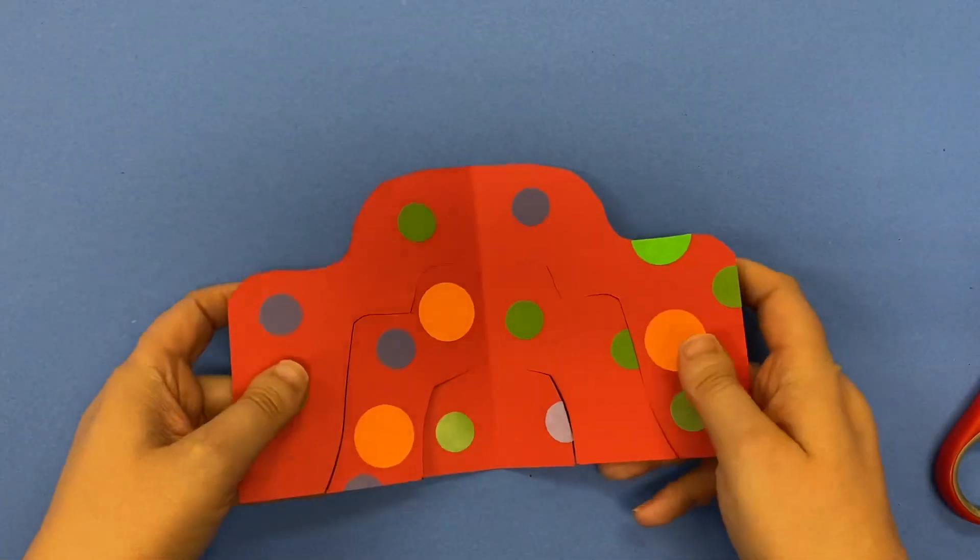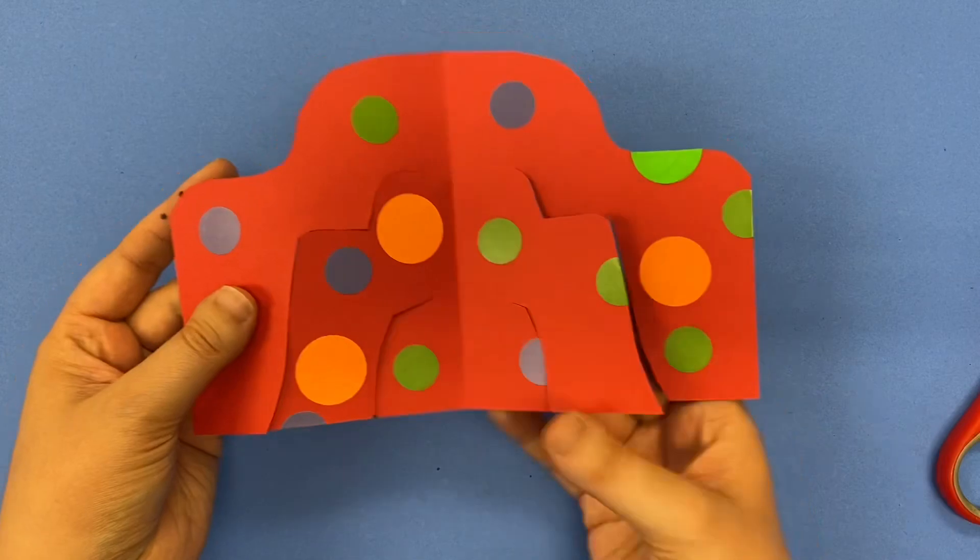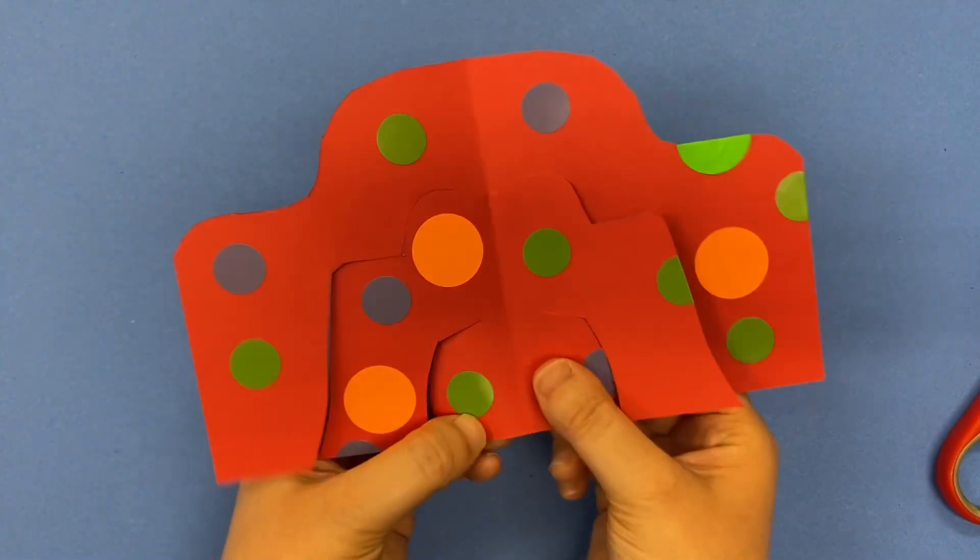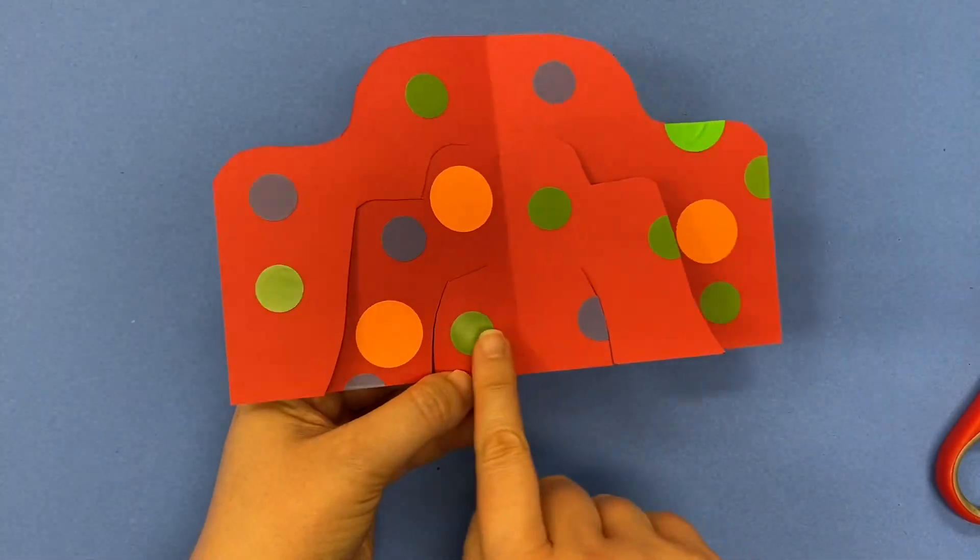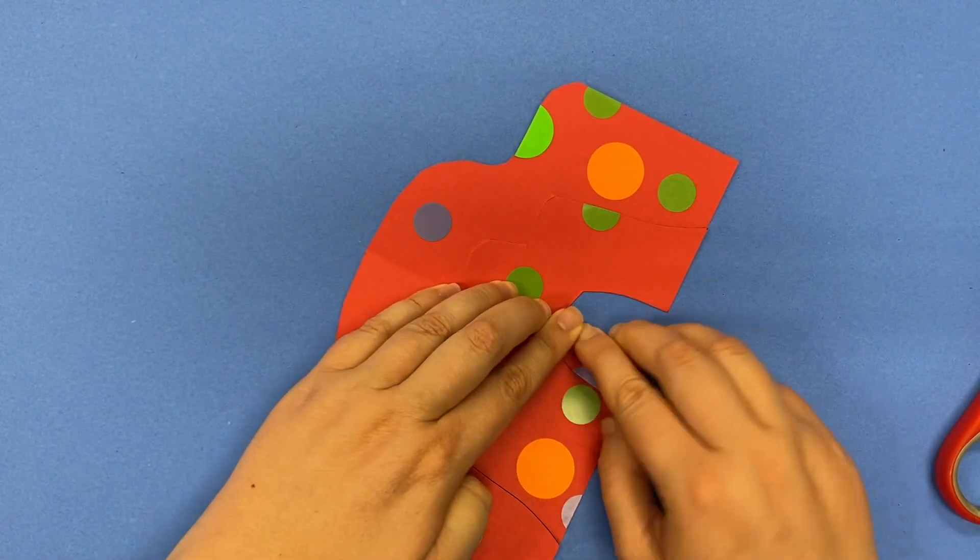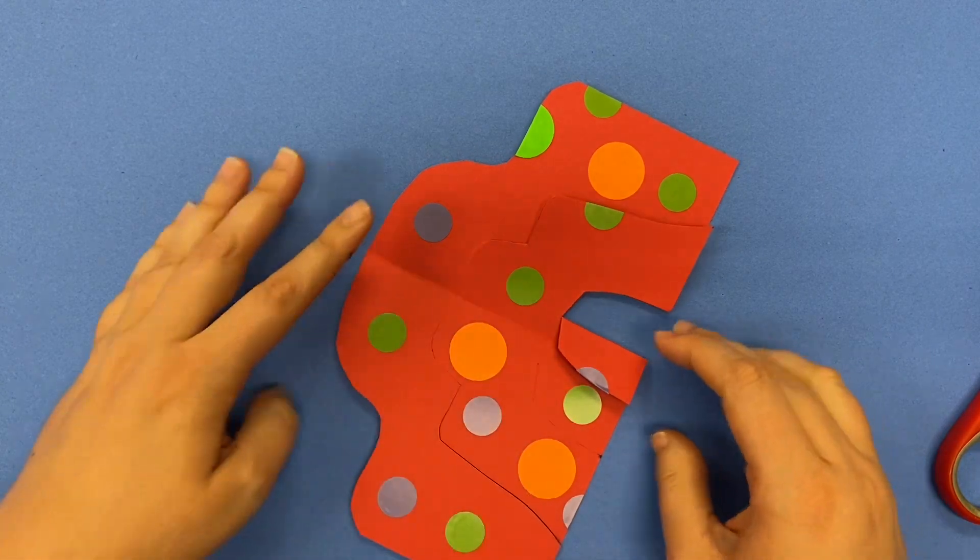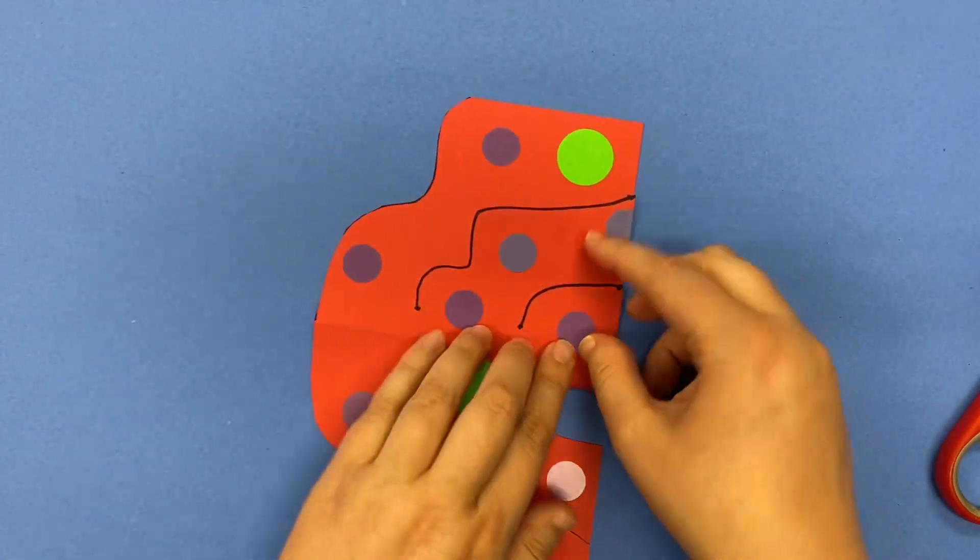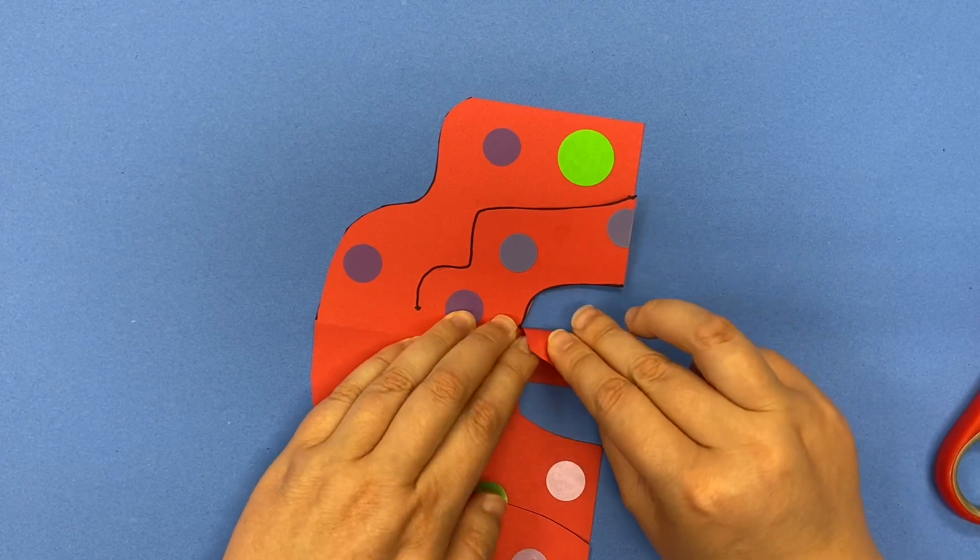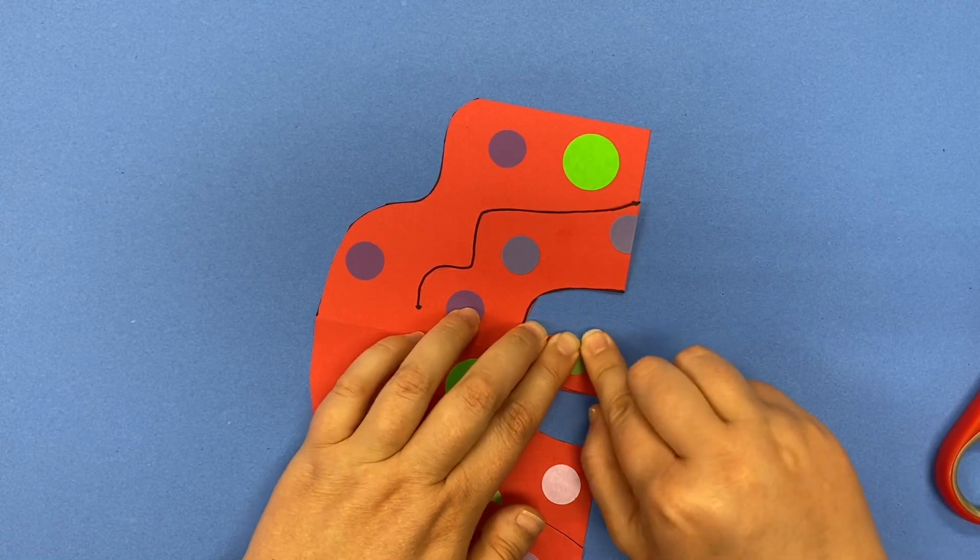So I'm going to start at the bottom. So I've got these little legs right here, and I'm going to fold one of them in front. Make sure that the line stays the same right along the bottom. And then I'm going to turn it over and I'm going to fold the other one in the opposite direction. Make sure that line is still lined up.